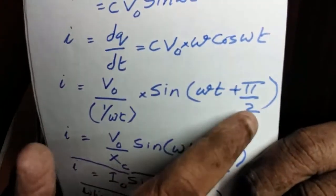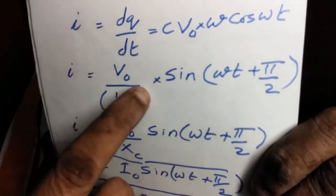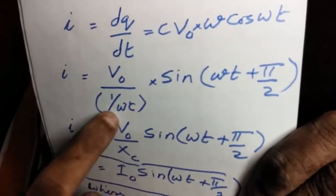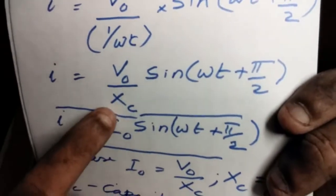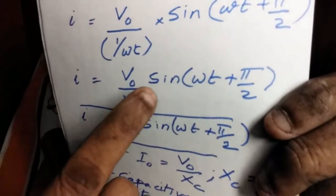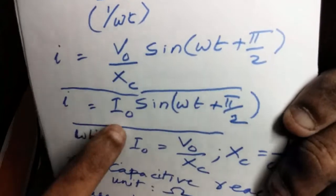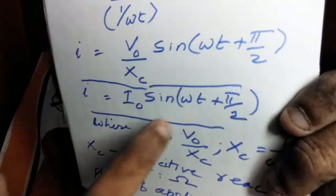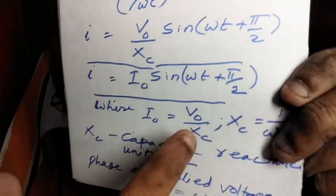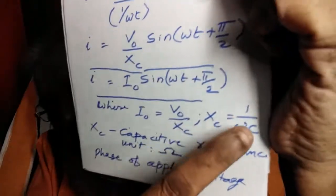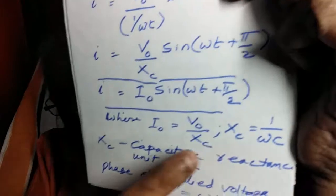Since sin(90° + θ) equals cos θ, we get I equals V₀ divided by 1/(omega·C), into sine(omega T + π/2). This quantity 1/(omega·C) comes in the place of resistance in a resistive circuit — we denote it by the letter X_C. So I equals V₀ by X_C into sine(omega T + π/2), which equals I₀ sine(omega T + π/2), where I₀ equals V₀ by X_C and X_C equals 1/(omega·C). We call X_C the capacitive reactance, expressed in ohms because it comes in the place of resistance.